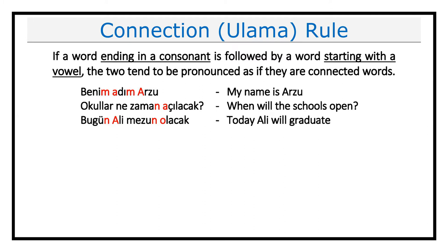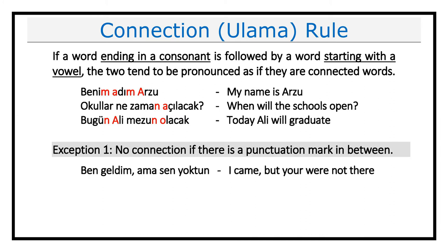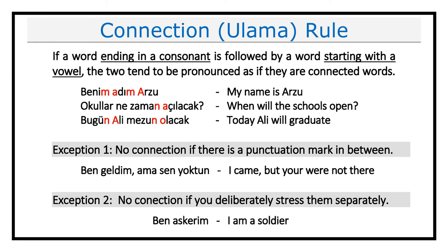Of course, as with every rule, there are exceptions with the connection rule too. The first exception is that you will not connect the words if there is any kind of punctuation mark between the words. So, in the example below, you will not connect them as 'ben geldim ama sen yoktun' because there is a punctuation mark and you have to separate them. The second exception is that you will not connect the words if you deliberately want to stress them separately by intonation, maybe to deliver some kind of a message of seriousness, anger, or other kind of emotion.